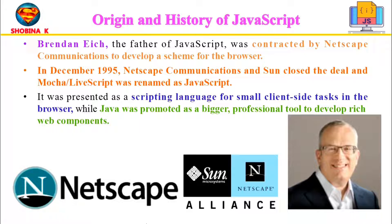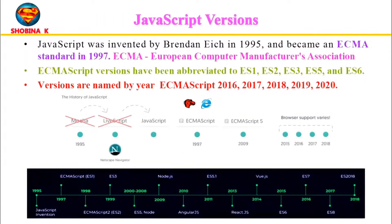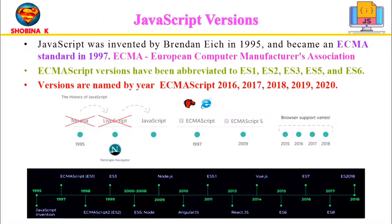The idea was to make Java available for big professional component writers, while Mocha would be used for small scripting tasks. In December 1995, Netscape Communication and Sun closed the deal, and Mocha, also known as LiveScript, was renamed JavaScript. It was presented as a scripting language for small client-side tasks in the browser, while Java was promoted as a bigger professional tool to develop rich web components.